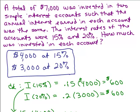So here's the answer to our problem. We checked it. We did get the same amount of interest when we invested 4,000 at 15% and 3,000 at 20%. So that's the answer to our problem.